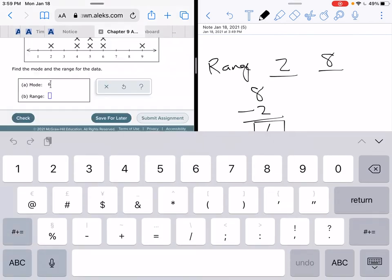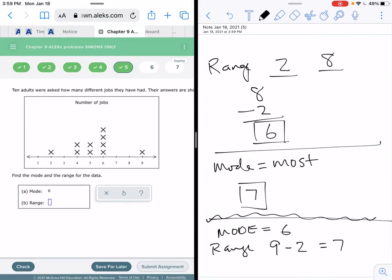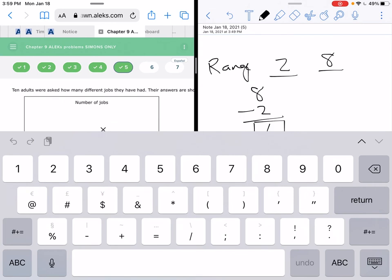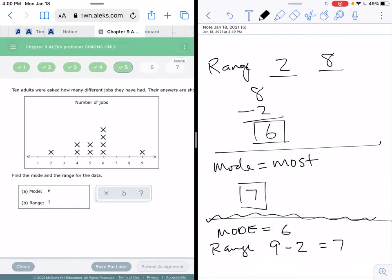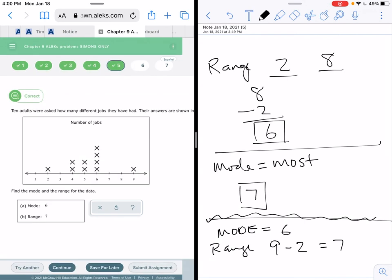So actually this one, if I'm not mistaken, is a reverse of the last one. All right. So your mode is six, your range is seven. There you go. You guys should be rock stars at this now.